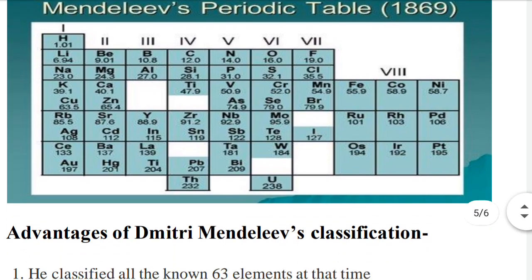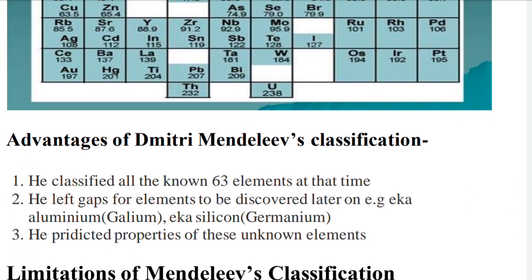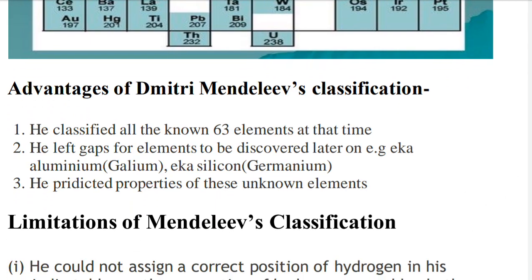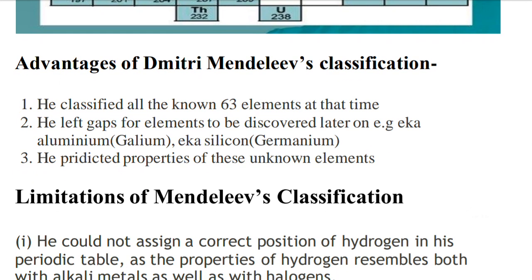Advantages of Mendeleev's classification: He classified all 63 elements known at that time. He left gaps for elements to be discovered in the future — for example, he left a gap for Gallium (predicted as Eka-Aluminium) which was later discovered with properties matching Aluminium. Similarly, Germanium was predicted as Eka-Silicon. He successfully predicted the properties of these unknown elements.